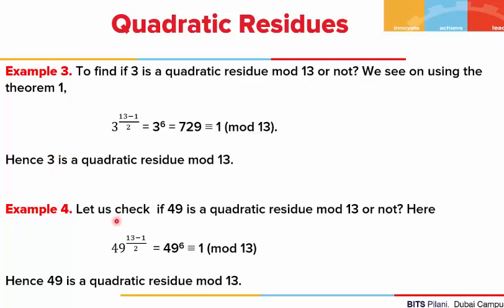In the fourth example, a is 49 and the modulus is 13. If we substitute a and p in the congruence given in the theorem, we see that 49^((13-1)/2) = 49^6, which is congruent to 1 mod 13. Hence, 49 is also a quadratic residue mod 13.